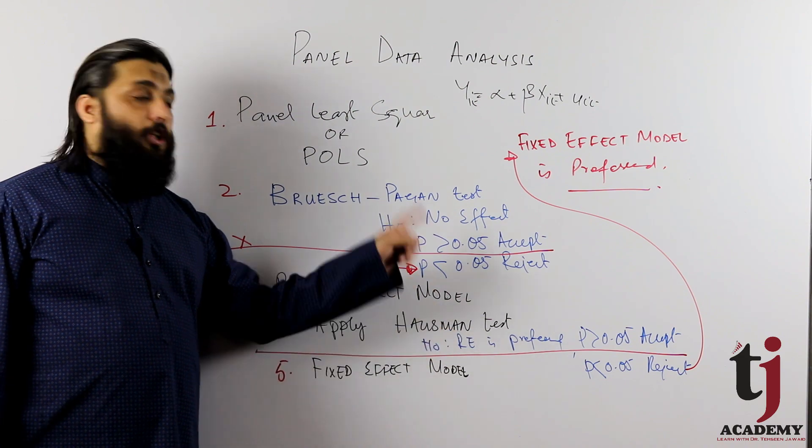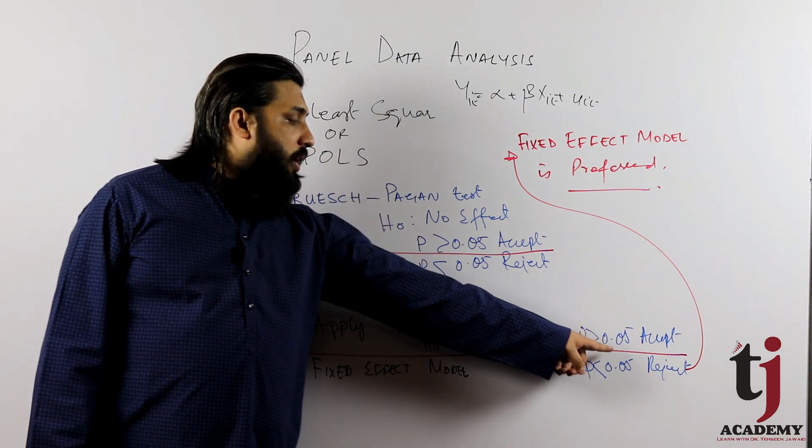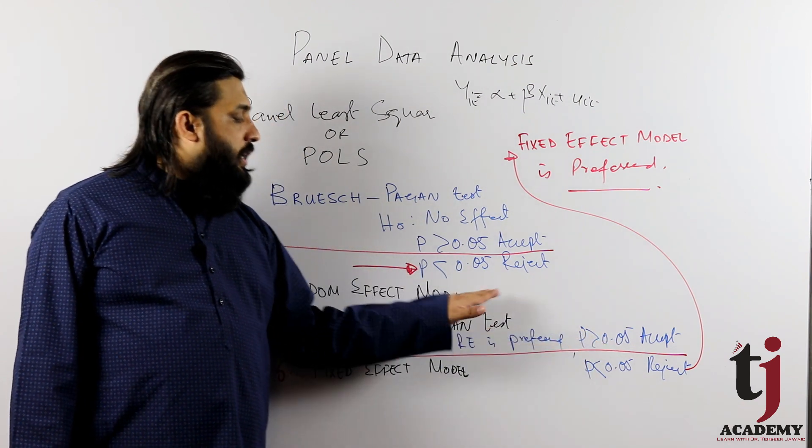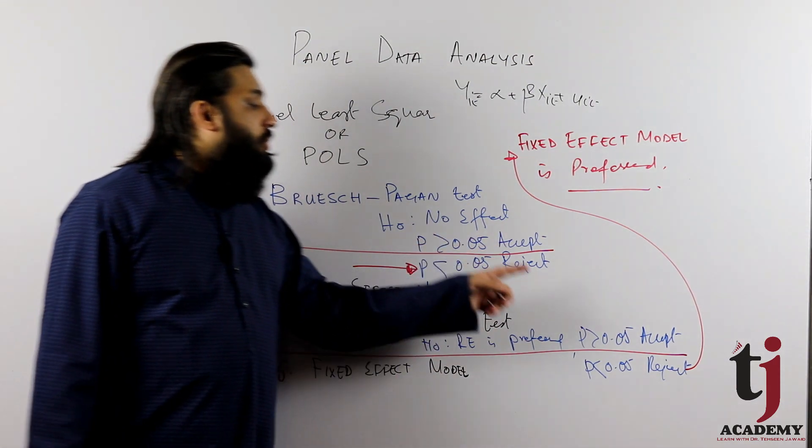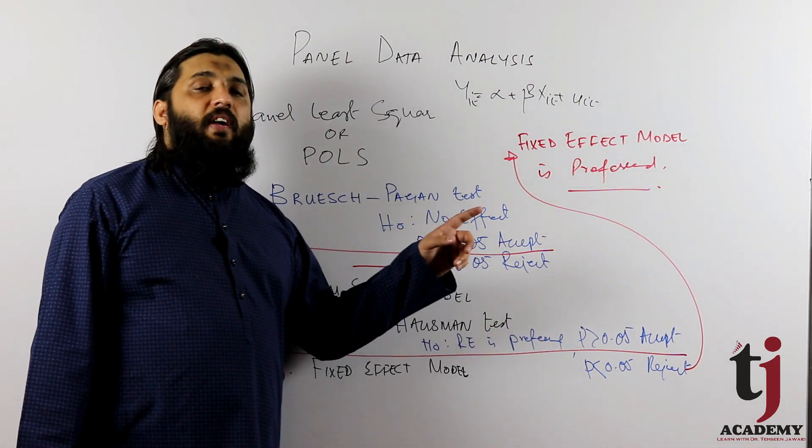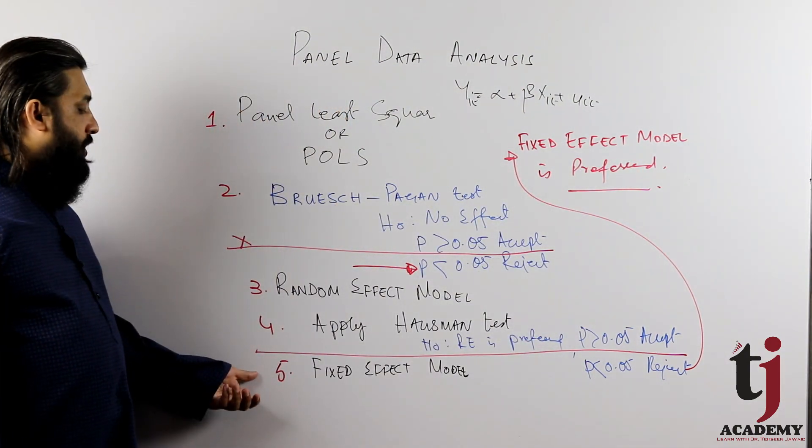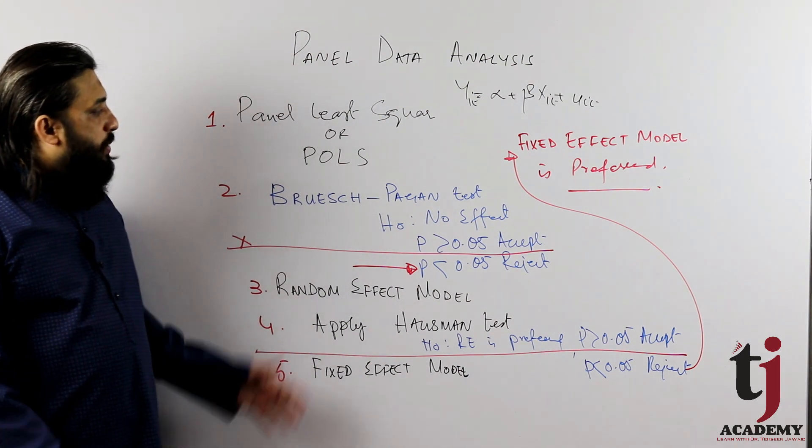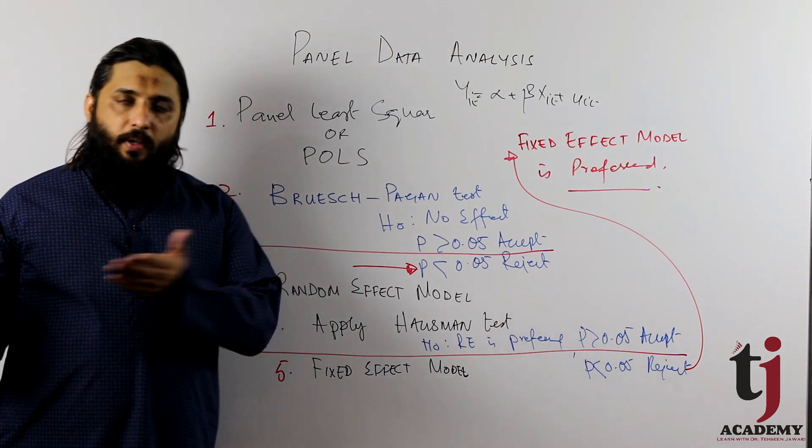run, run, run Hausman test. Apply Hausman test. Random effect is preferred, then stop, random effect that model. But if you reject, then fixed effect is preferred. So this sequence, procedure when you apply to the procedure you have.